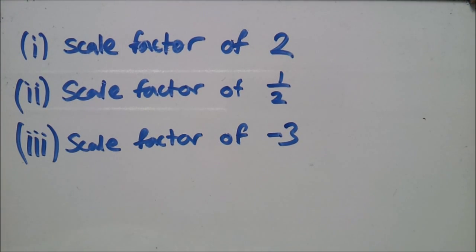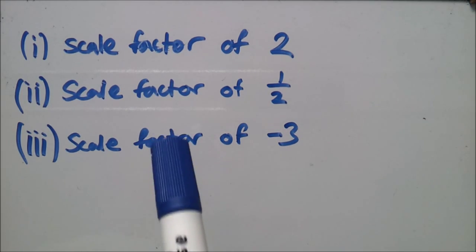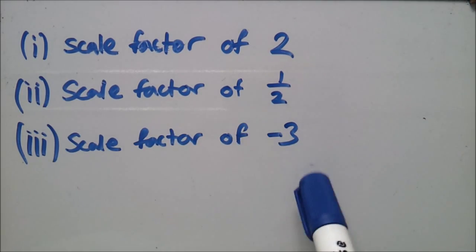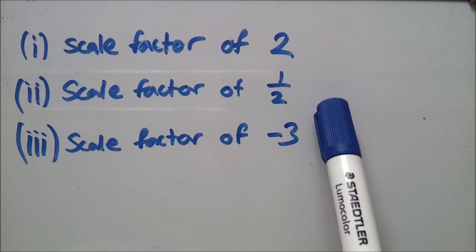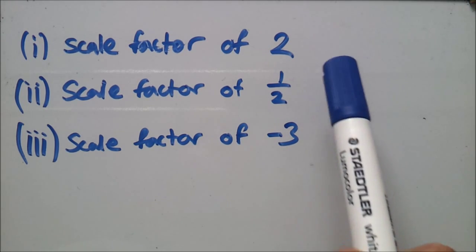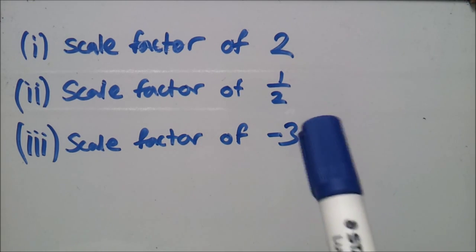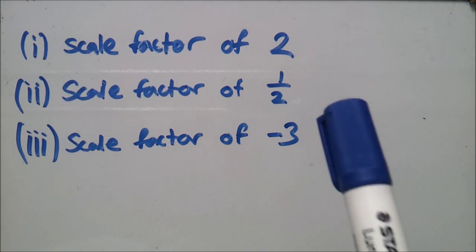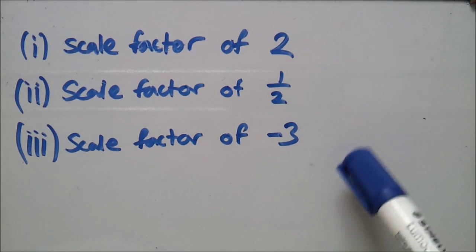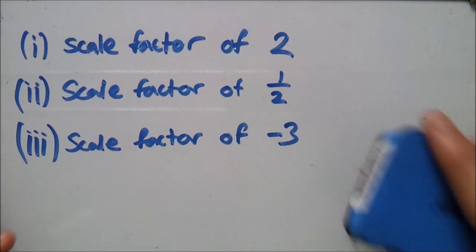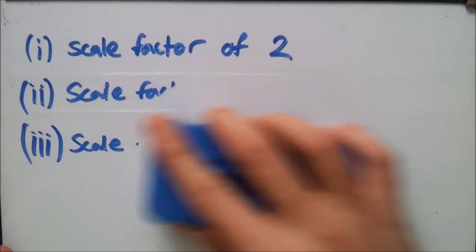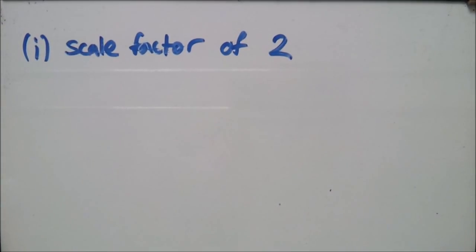Hello guys. In this video we'll be figuring out how to find an enlargement of any given shape for any scale factor. We're going to find scale factors of two, a half, and minus three. By the end of this video you'll understand how to use each of these and you'll be able to find an enlargement for any shape at any given time. First, let's do number one: a scale factor of two.